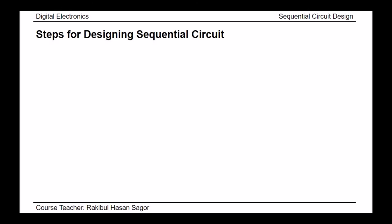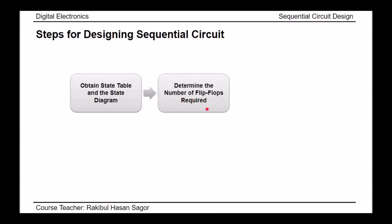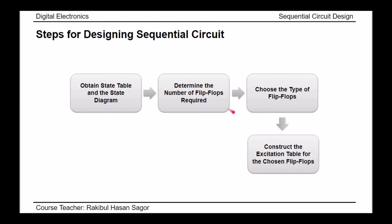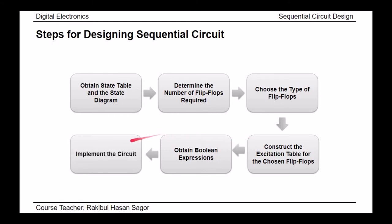Let's review the steps for designing a sequential circuit. First, obtain the state table and state diagram. Second, determine the number of flip-flops required — this equals the number of bits per state. Third, choose the type of flip-flop. Fourth, construct the excitation table for the chosen flip-flop. Fifth, obtain Boolean expressions from the excitation table. Finally, implement the circuit based on those expressions.